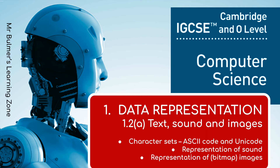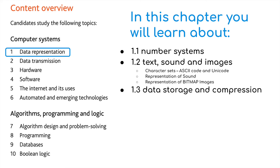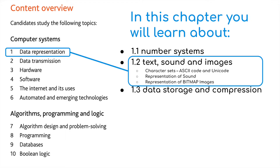For this next video we're going to continue with data representation but we're going to move on to part two, which is all about text, sound and images. In particular this is broken into three specific parts: character sets, working with ASCII code and Unicode, the representation of sound and the representation of bitmap images. All these different file formats need to be converted into a binary format in order for a computer to understand and work with it.